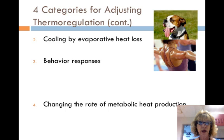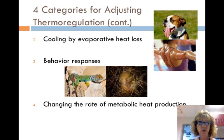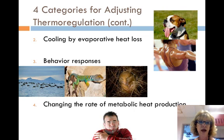Animals also thermoregulate using behavioral responses. Endo- and ectotherms change posture or move around to control body temperature. Some examples are basking, hibernation, and migration. The last way animals thermoregulate is changing the rate of metabolic heat production. Endo- and ectotherms can increase metabolic heat production when exposed to cold — for example, shivering and moving muscles.